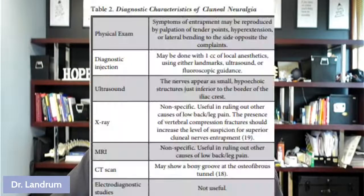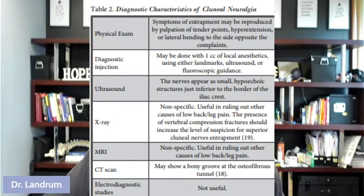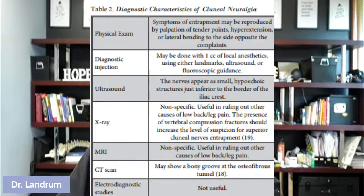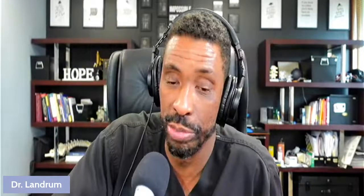Can you figure out if the clunial nerve is the problem with exam and imaging alone? Actually, it's pretty difficult. If you palpate the area, you can feel it; bending to the opposite side sometimes causes pain; local anesthetic can sometimes make it feel better. On ultrasound you can see the nerves but not necessarily any pathology. X-ray reveals hardly anything. MRI is nonspecific and can't diagnose clunial nerve issues, nor can CT scan. EMGs and nerve conduction studies also don't provide benefit. So your clinician has to know this is a potential issue — otherwise they may very well miss this nerve problem, which is different from a disc and nerve problem like sciatica.